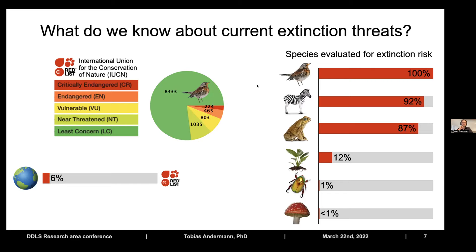This framework relies on data being available, and the data distribution is much better for some groups than others. For birds, all currently described species are assessed. Similarly for mammals and amphibians. But for plants, insects, and fungi, we miss the vast majority of species. For almost all fungi species, we cannot decide whether we're looking at a threatened or non-threatened species. Averaged globally, only 6% of all known species have an extinction threat status assigned within this framework.